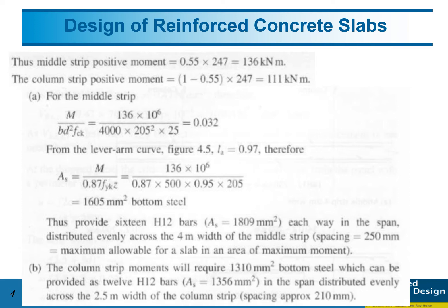The balance for the column strip is 1 minus 0.55, so 45 percent contributes to the column strip, which is 111 kN·m. After that, we calculate the reinforcement bar.